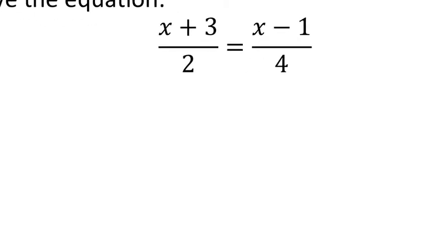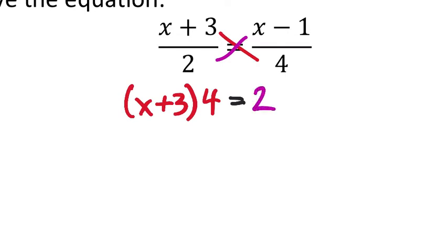So with cross multiplication, I take the crossing numerator and denominator and multiply these. That would mean that I'm going to take x plus 3, and I have it in parentheses because I'm multiplying that whole numerator by 4. This should equal the other numerator and denominator cross-multiplied. So 2, and then I'd multiply that completely by x minus 1. So I do need that set of parentheses there.